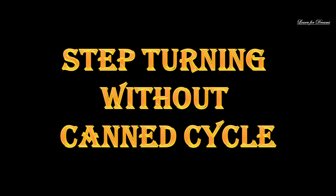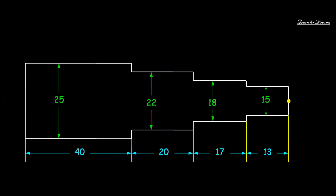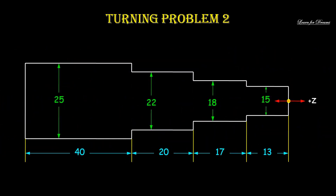Hello students and welcome back to the channel Learn for Dreams - learn with fun, say goodbye to boredom. Today we will see a CNC program for step turning. This is the given diagram. The horizontal axis is the Z axis and the vertical axis is the X axis. First of all, we will mark all the points.